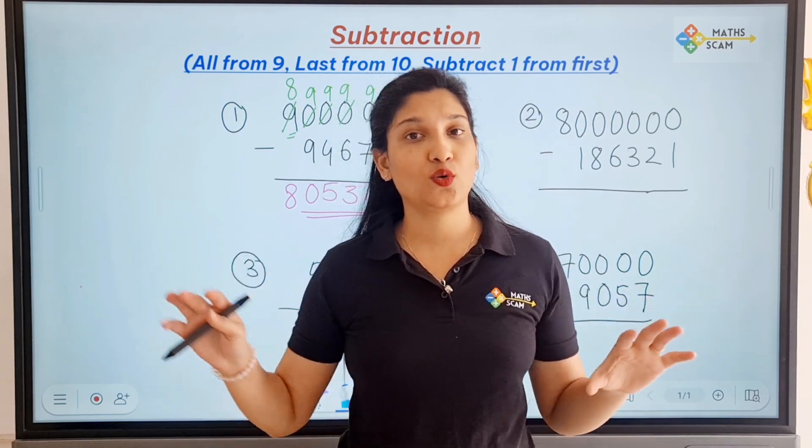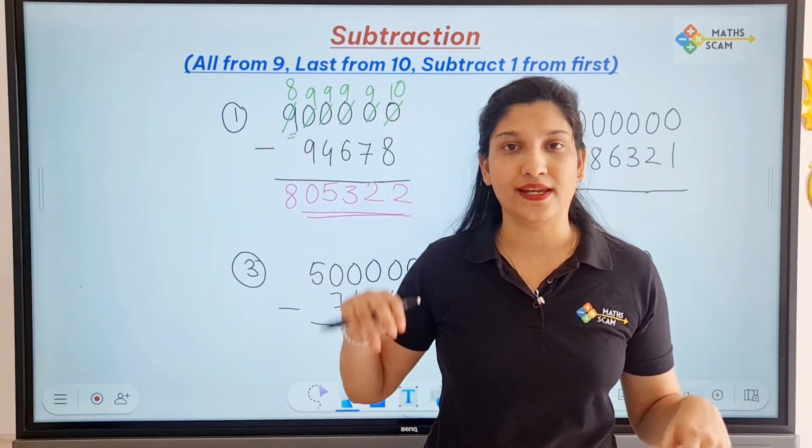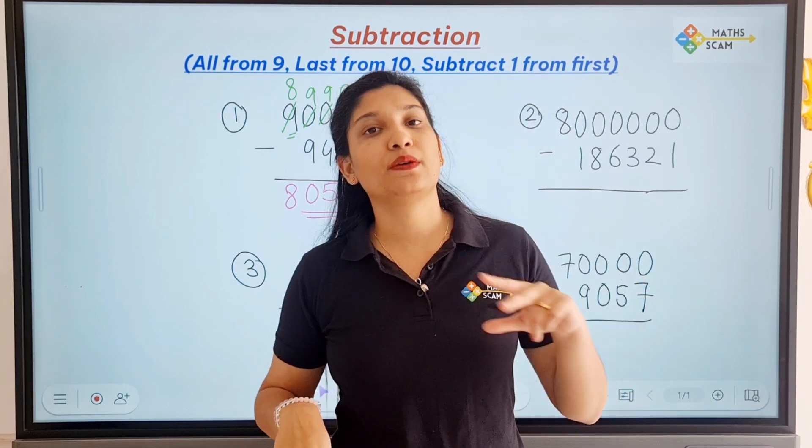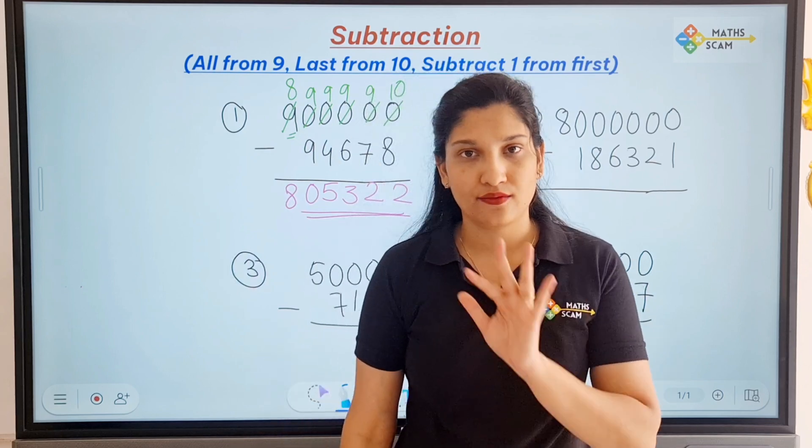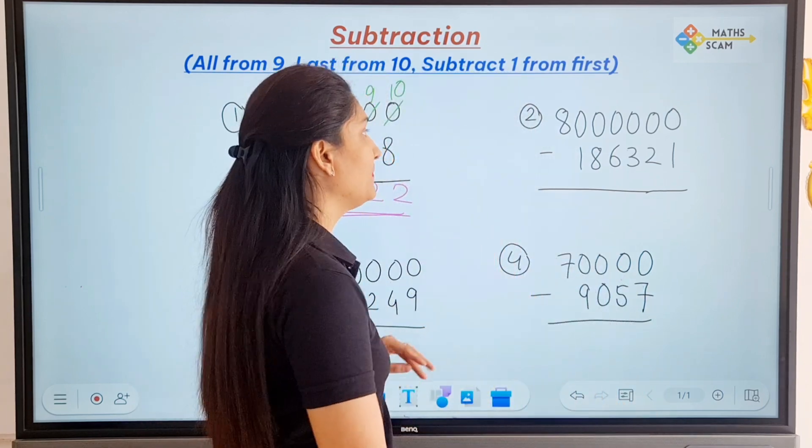This trick is only for 0s and the first digit can be any number. So all 0s will be from 9 and the first number we are going to subtract 1 from that, you just have to remember that.